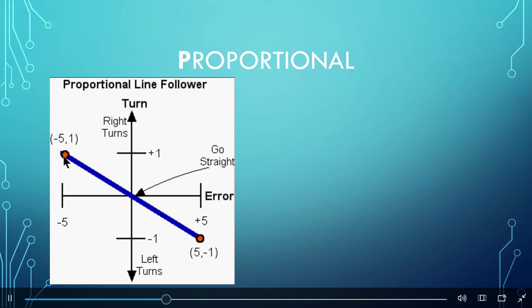Proportional means there is a linear relationship between the two variables. That means a graph of the two variables against each other produces a straight line, as shown in the diagram.